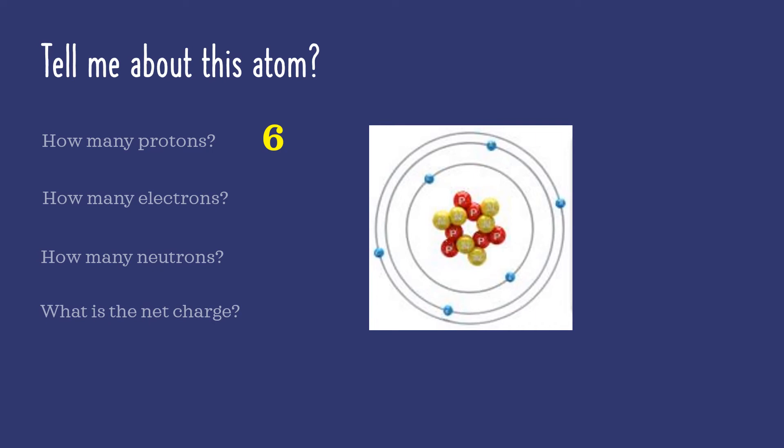Now how many electrons? I see six small blue dots hanging out in the electron cloud. Now how many neutrons? These are represented by the yellow dots in this cartoon image and I counted six of those.